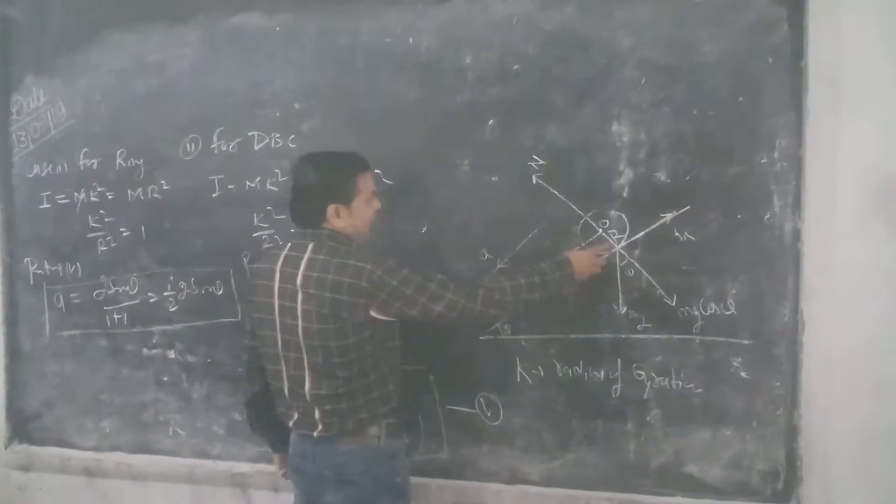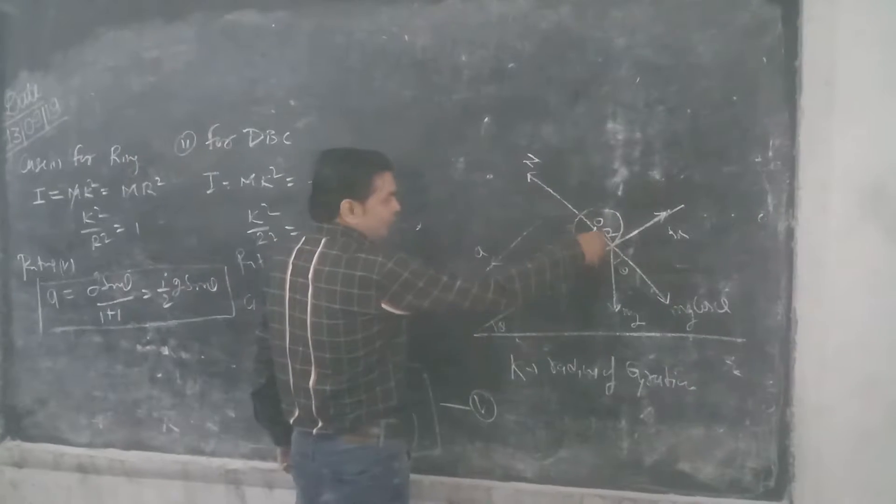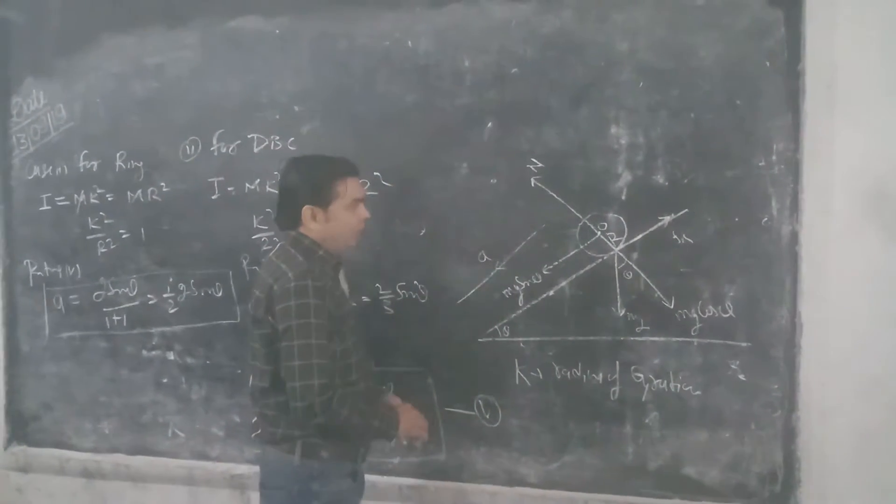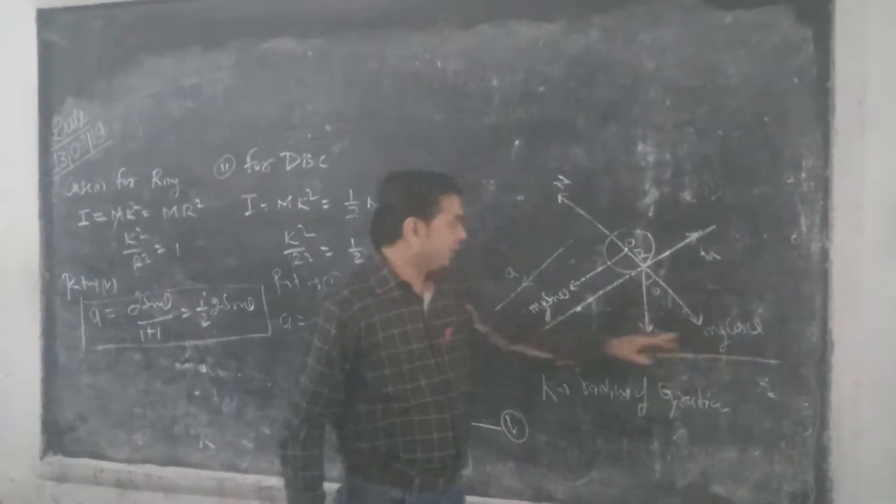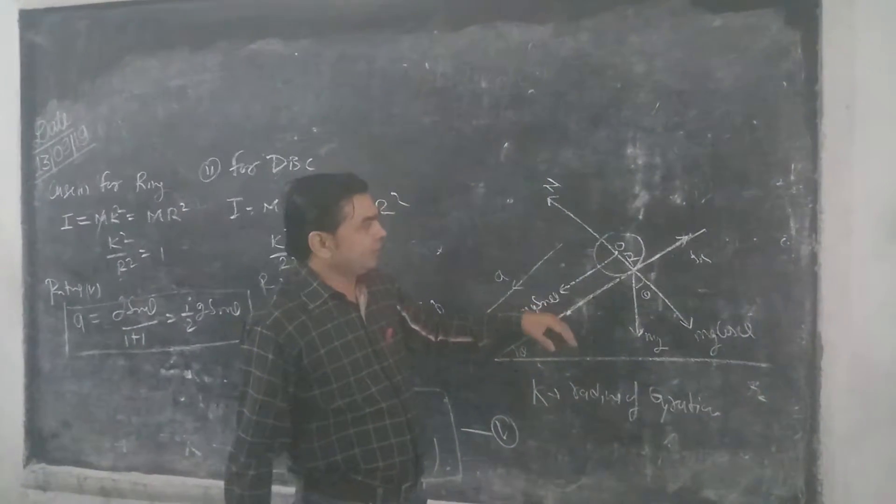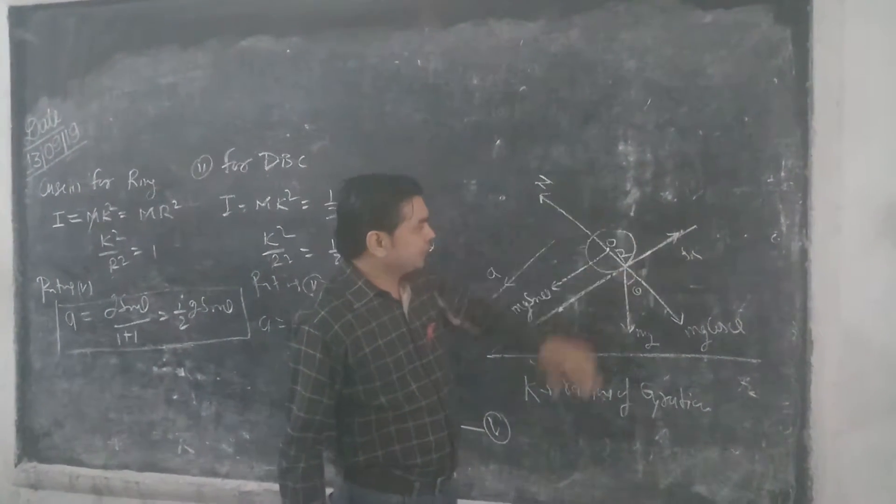then always reaction acting perpendicular, weight downward, the component of theta, mg cos theta is the vertical component, the other can be sine theta, and the friction force appears,